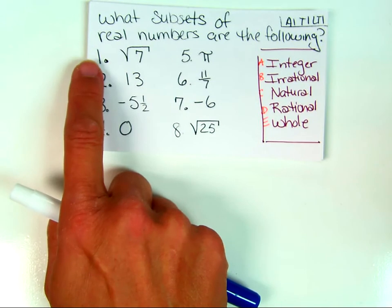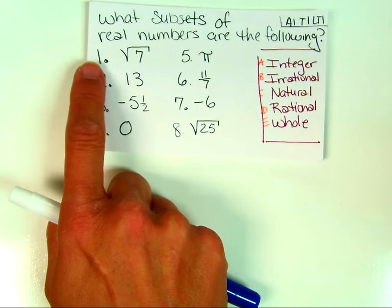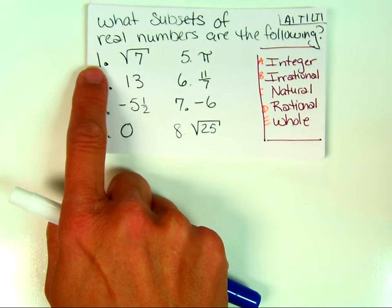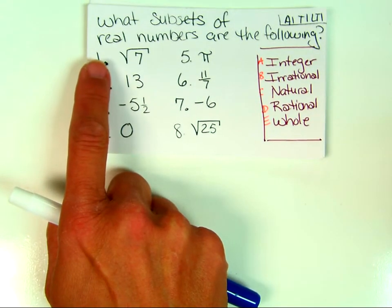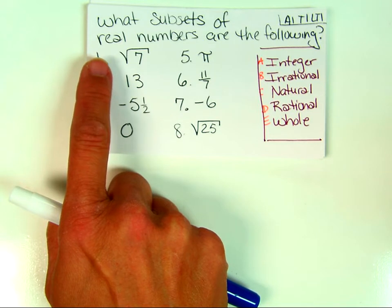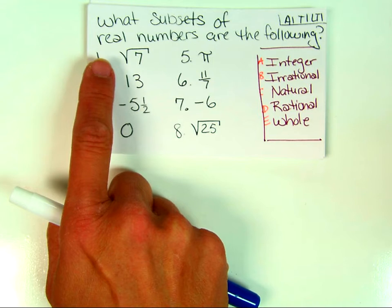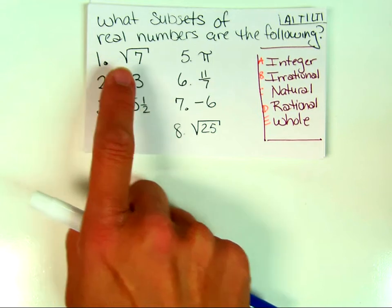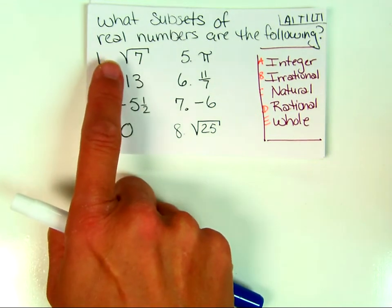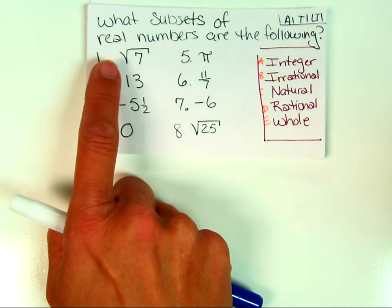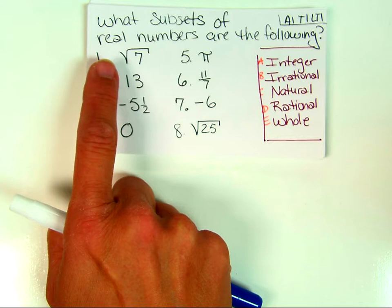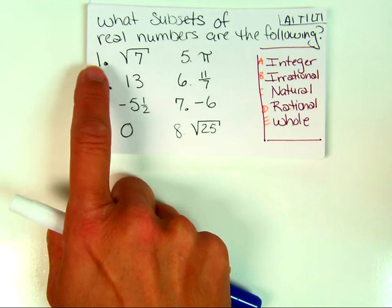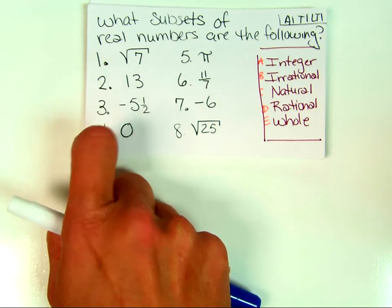Number one: square root of seven. Anytime you see a square root, your antenna needs to go up and check if there's a perfect square. You can check in your calculator or use memorized values. There's no integer that when multiplied by itself equals seven, so the square root of seven is an irrational number.